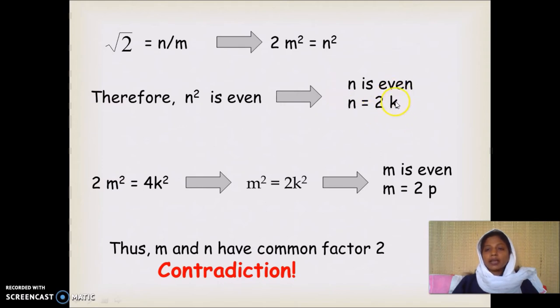Because k can be anything. Since we have a 2 as a factor, this product will be even. Now we will substitute in the place of n squared, 2k the whole squared. So 2m squared is equal to 2k the whole squared, which is equal to 4k squared.